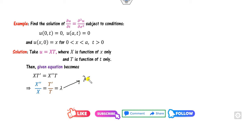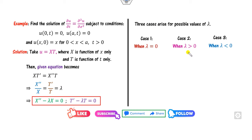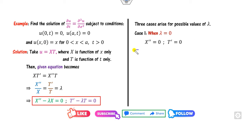We write X'' − λX = 0 and T' − λT = 0, and consider three cases: λ = 0, λ > 0, λ < 0. When λ = 0, the auxiliary equation gives m² = 0, so m = 0, 0, yielding X = c₁ + c₂x and T = c₃.